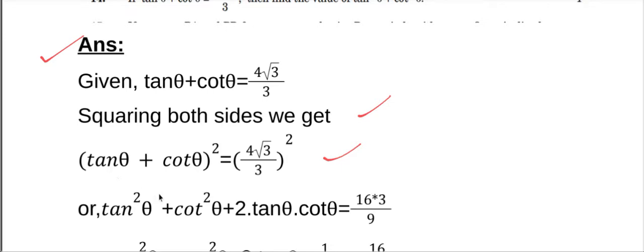Expanding using (a + b)²: (tan θ + cot θ)² equals tan²θ plus cot²θ plus 2·tan θ·cot θ, and this equals (4√3 divided by 3)².